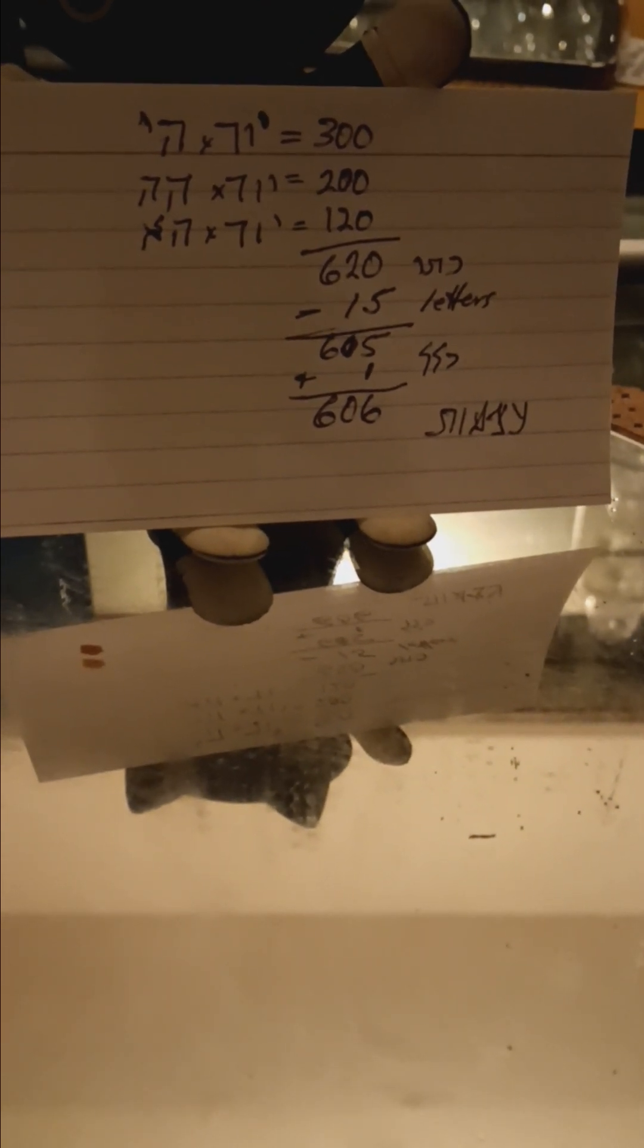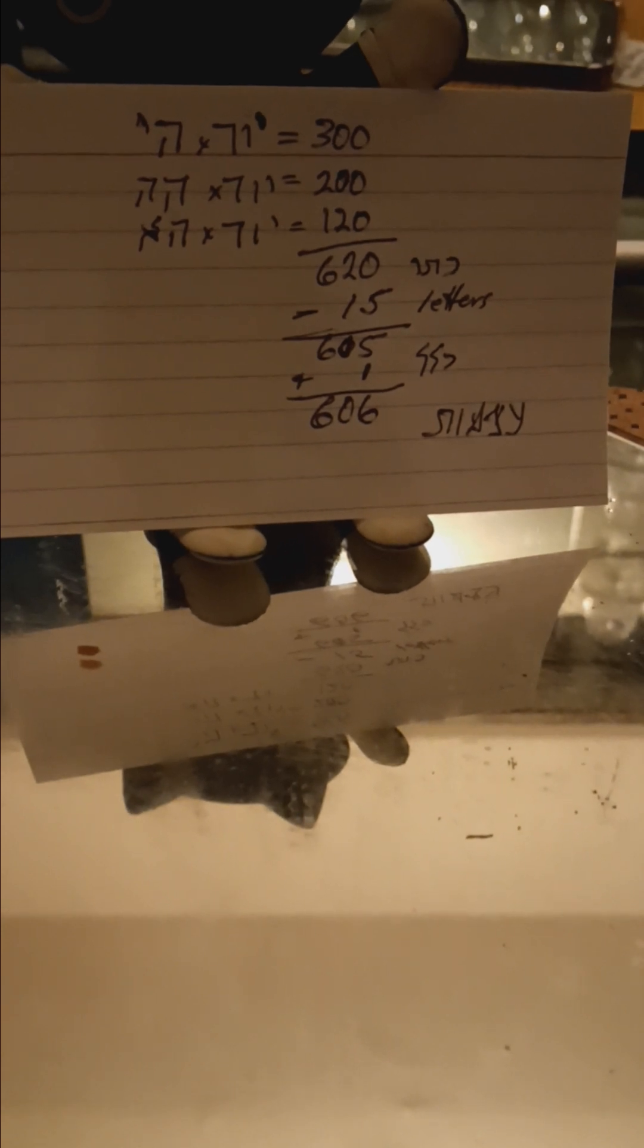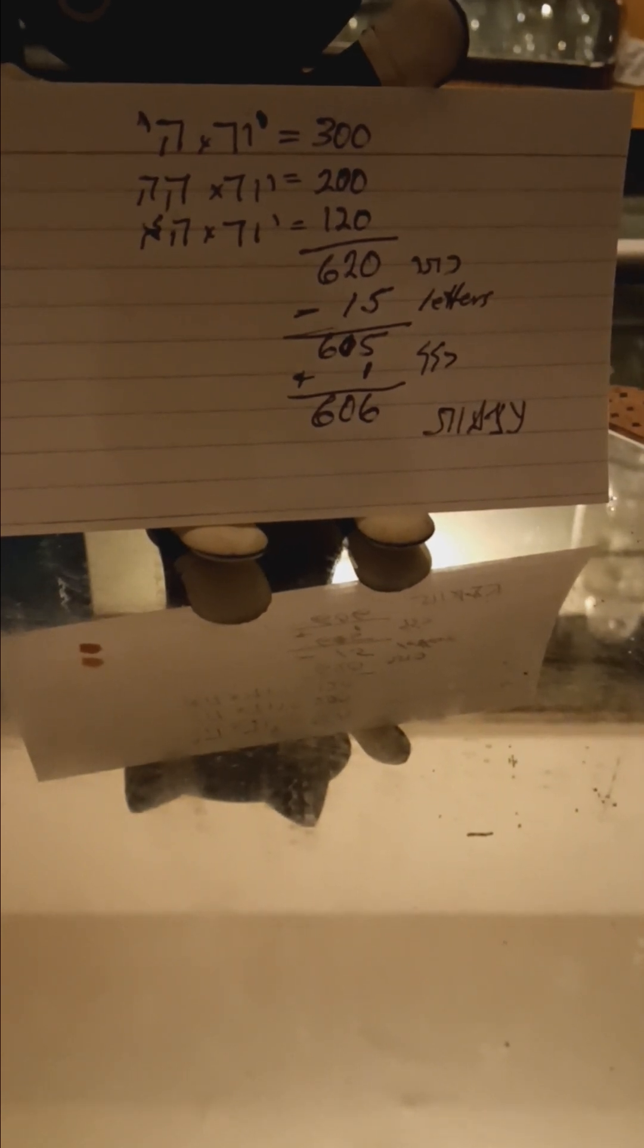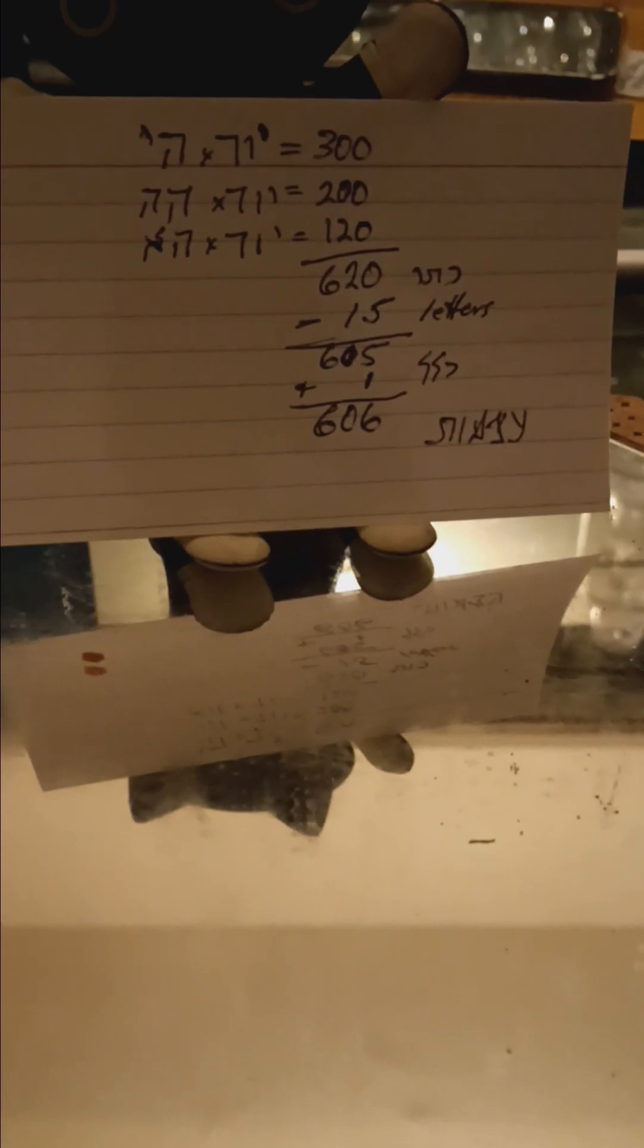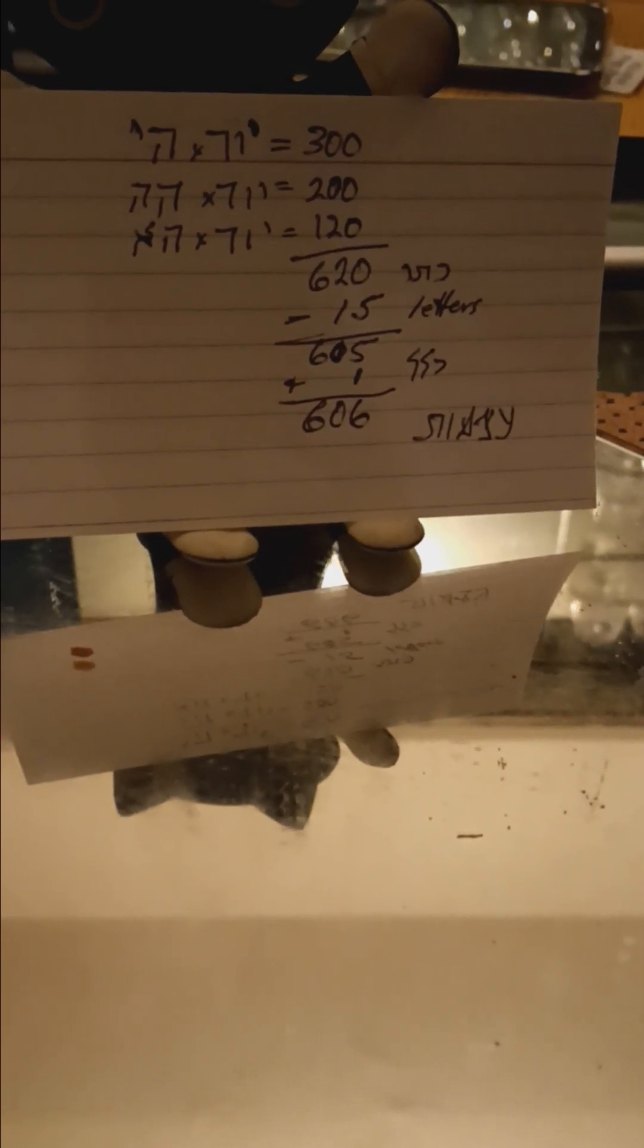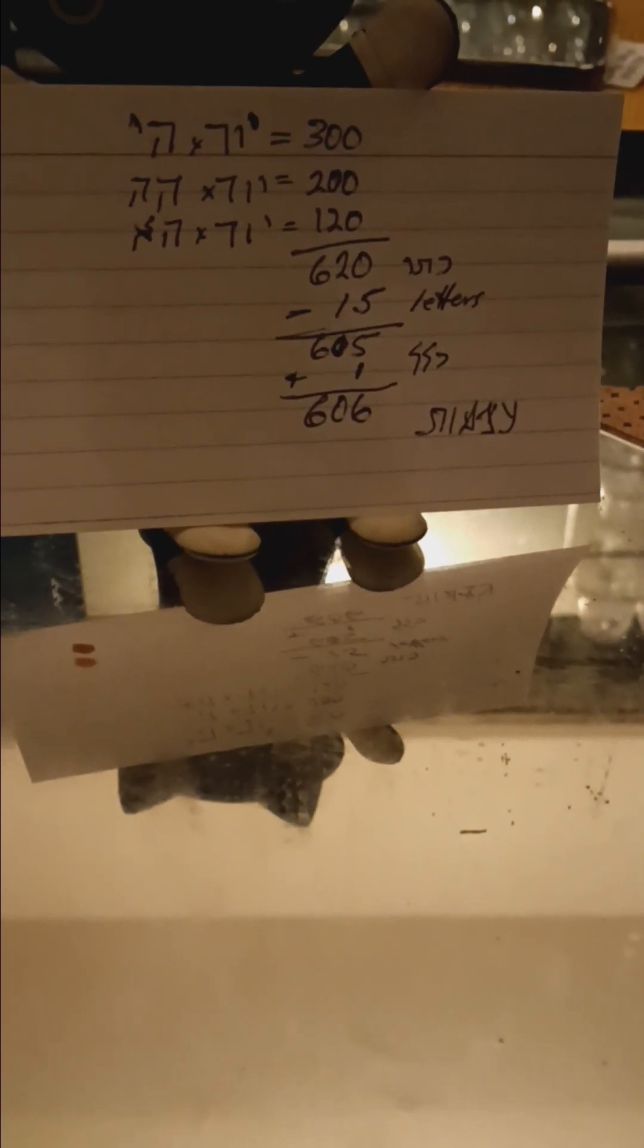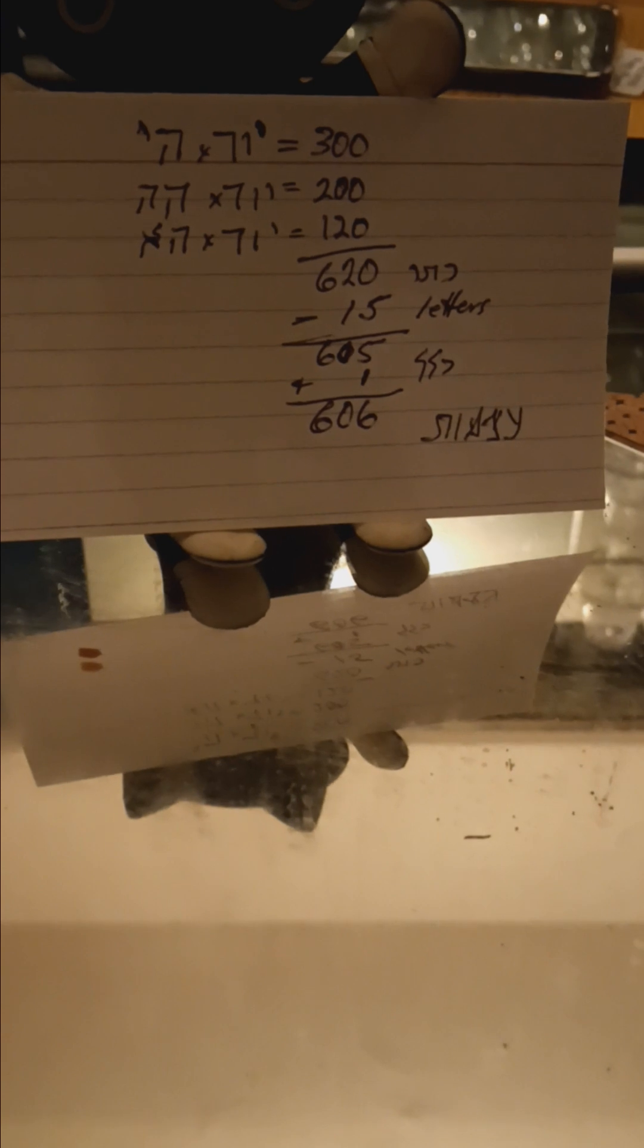And so there are 15 letters here, three for the Yud, two for the He, in each of the three multiplications. So that's 15 letters that we have to deduct. If we deduct these 15 letters, we get 605 plus a Kolel, which is no different than what we had in the last one. We had 605 and then a Kolel. And now we have 605 and a Kolel, 606, which is Atzmut again.